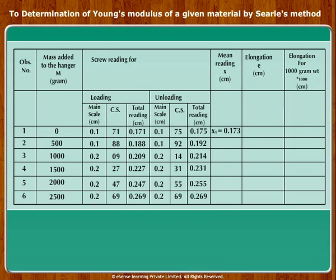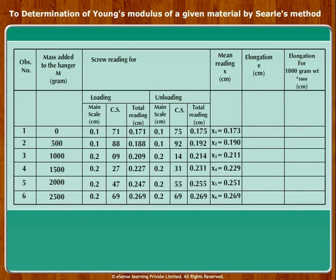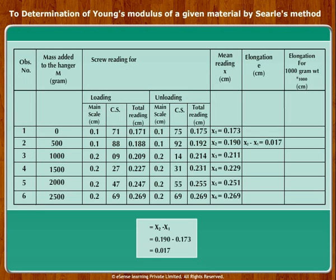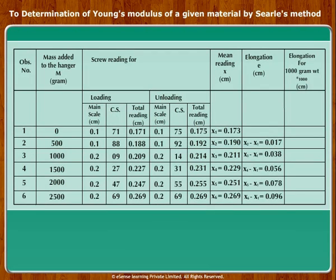For mass m equal to 0, find the mean reading x1 of the two readings corresponding to loading and unloading. Similarly, find the mean of other readings corresponding to different masses. Now, find the elongation e due to mass m by taking the difference of the mean reading corresponding to that mass from the reading corresponding to no mass, that is x1. Thus, elongation e is given by x2 minus x1. Similarly, find the elongation e due to other masses and note these carefully in table 2.